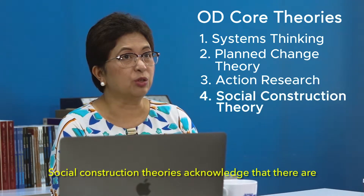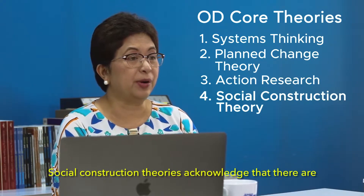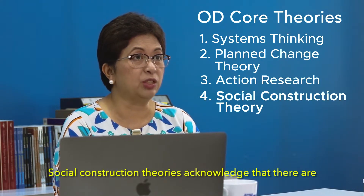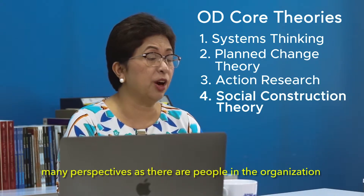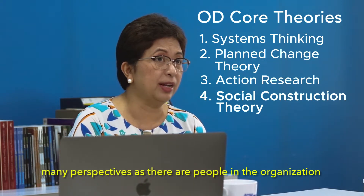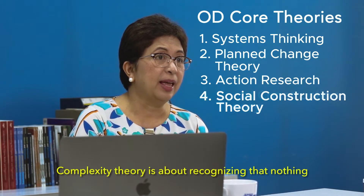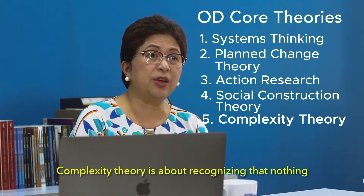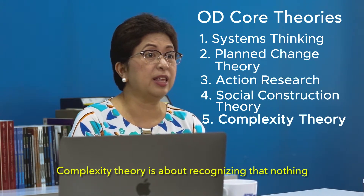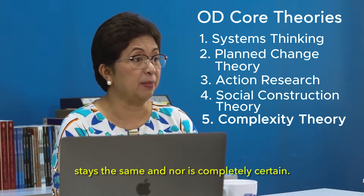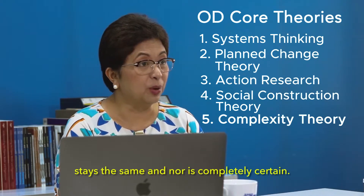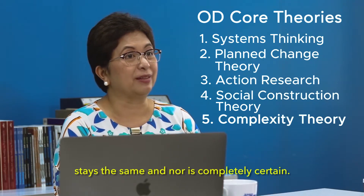Social construction theories acknowledge that there are as many perspectives as there are people in the organization. Complexity theory is about recognizing that nothing stays the same and nor is completely certain.